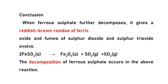Conclusion: when ferrous sulphate further decomposes, it gives a reddish-brown residue of ferric oxide, and fumes of sulfur dioxide and sulfur trioxide evolve. The color of ferric oxide is reddish-brown. Equation: 2FeSO₄ → Fe₂O₃ + SO₂ + SO₃. This reaction is an example of thermal decomposition, because when we heat the substance it decomposes into many substances.